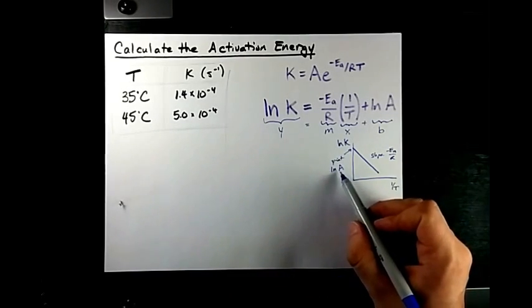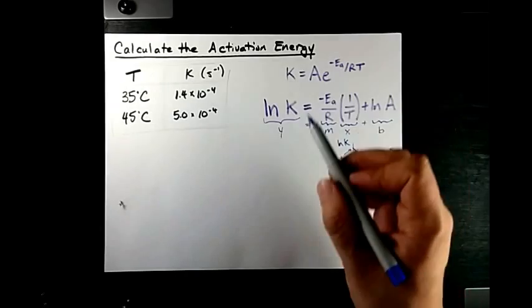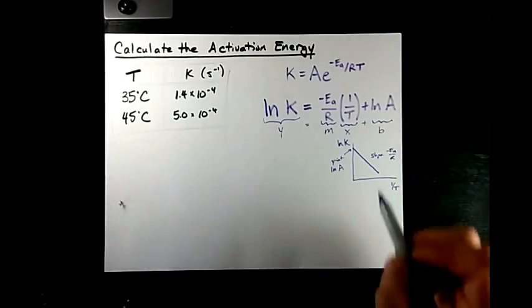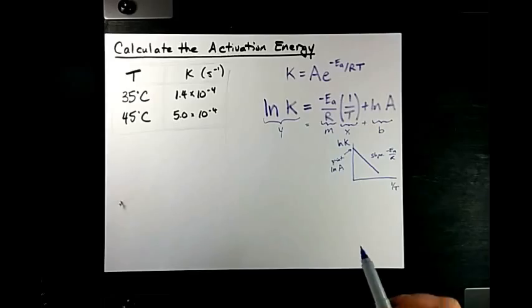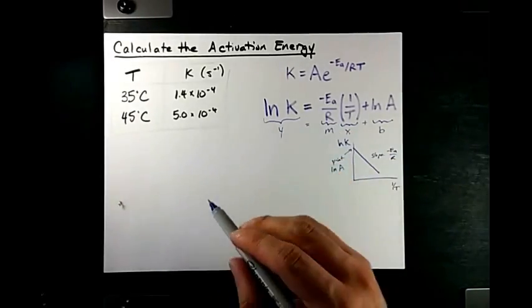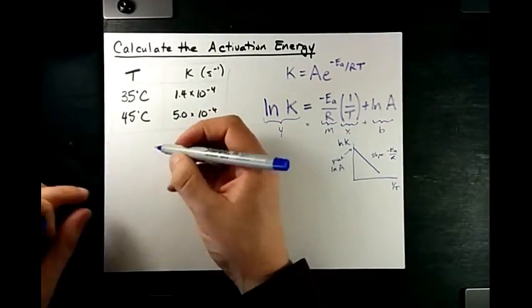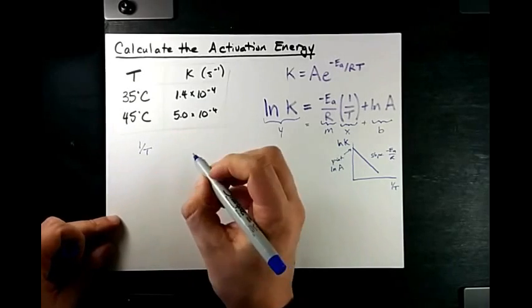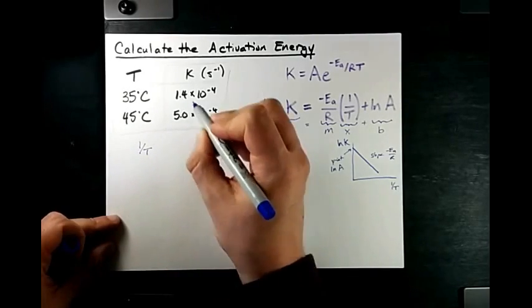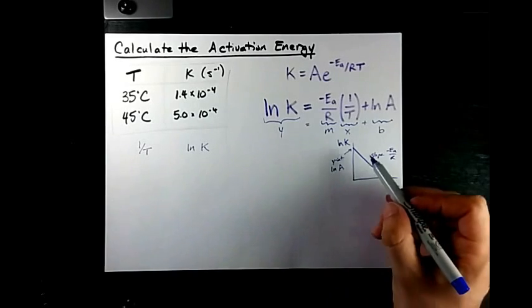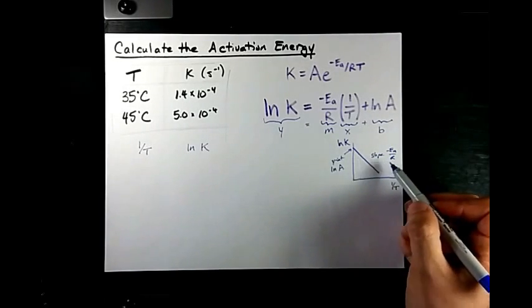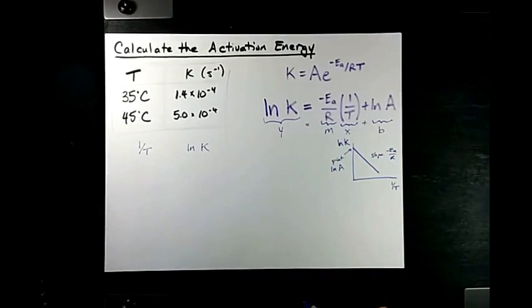If you're ever asked to calculate capital A, you'll probably want to do it with this method. In any case, the slope being negative EA over R is the key bit we're going to use. What that means is that if our x values are actually 1 over T and our y values are actually ln K, then negative EA over R is the slope between the two points.